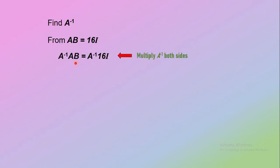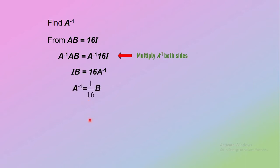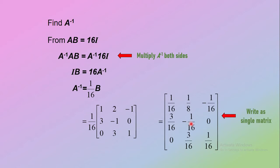Next, find A inverse. We deduce A inverse from AB equals 16I, which we obtained in the previous solution. Multiply on the left by A inverse on both sides. Remember, A inverse times A is the identity matrix, and the constant 16 can move to the front. So A inverse times identity gives A inverse itself, and identity times matrix B gives matrix B itself. Therefore, A inverse equals one-sixteenth times matrix B. Substitute matrix B into the equation and write as a single matrix by expanding the constant 1 over 16 with each element in matrix B.